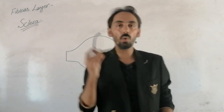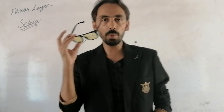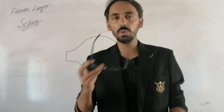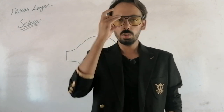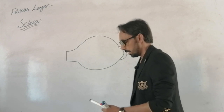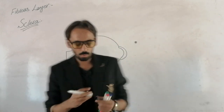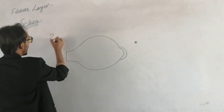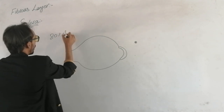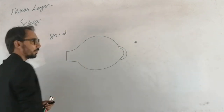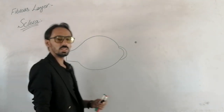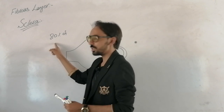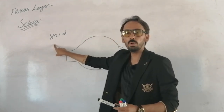If you can see in my eyes, the whitish portion is called the sclera. The sclera is the very toughest membrane of the eyeball, and it covers 80% of the total surface area of the eyeball.